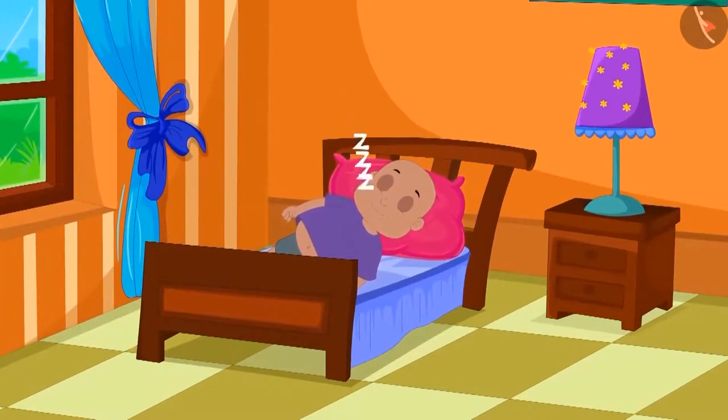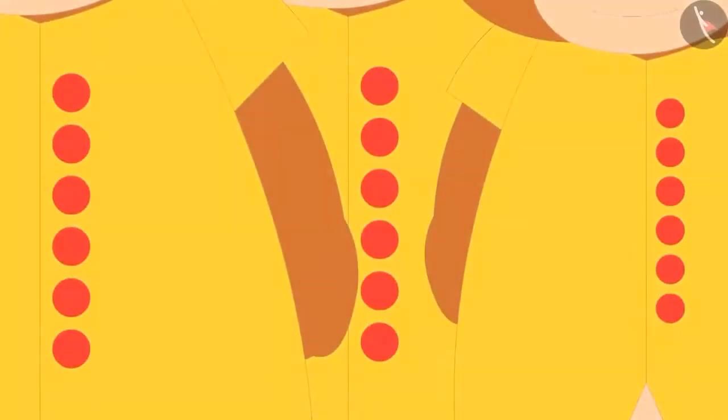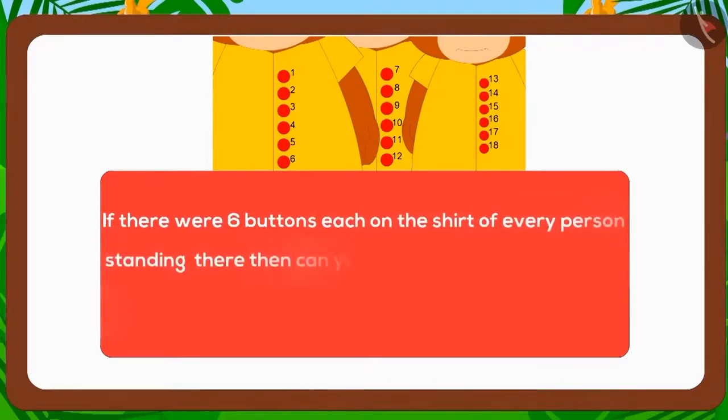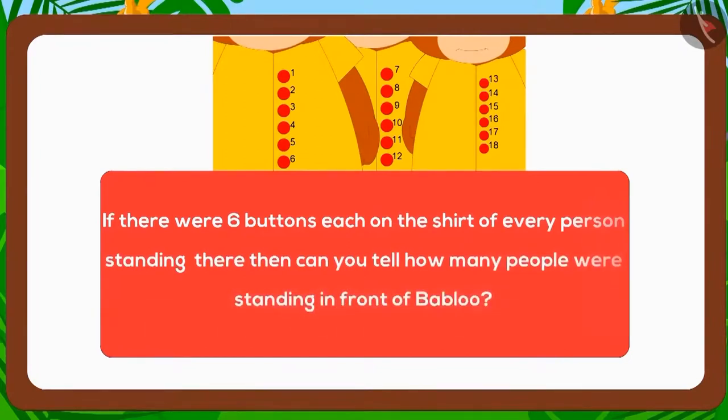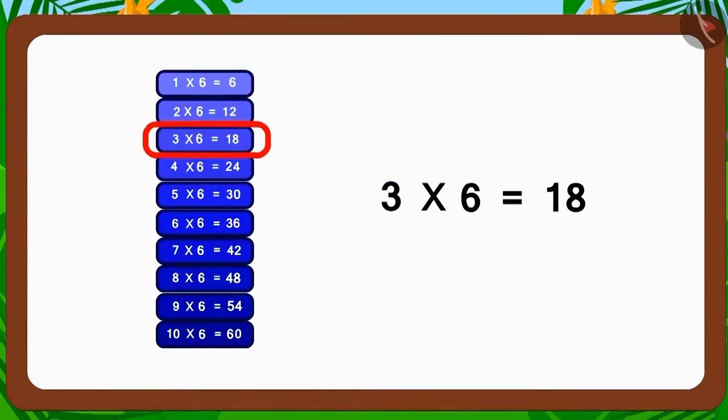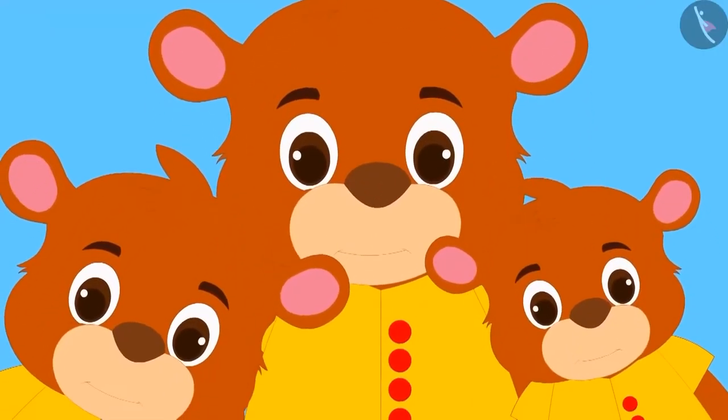Suddenly, Bablu heard some voices. When Bablu tried to see in his half-asleep state, everything looked hazy to him. And he could only see eighteen buttons. If every person present there had six buttons each on their shirt, then can you tell how many people were standing there? Yes! You have solved it correctly. Three people were standing in front of Bablu.